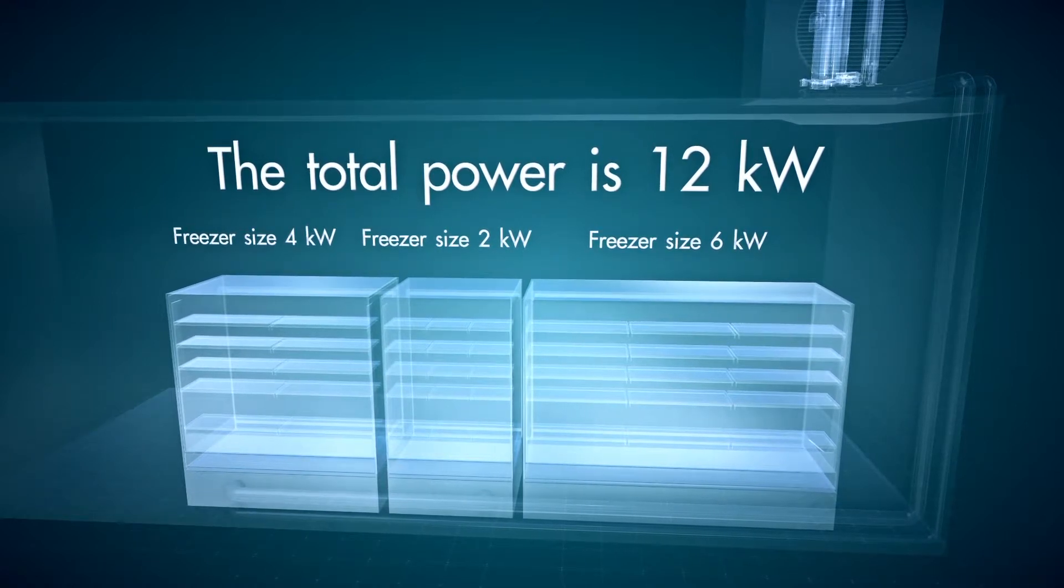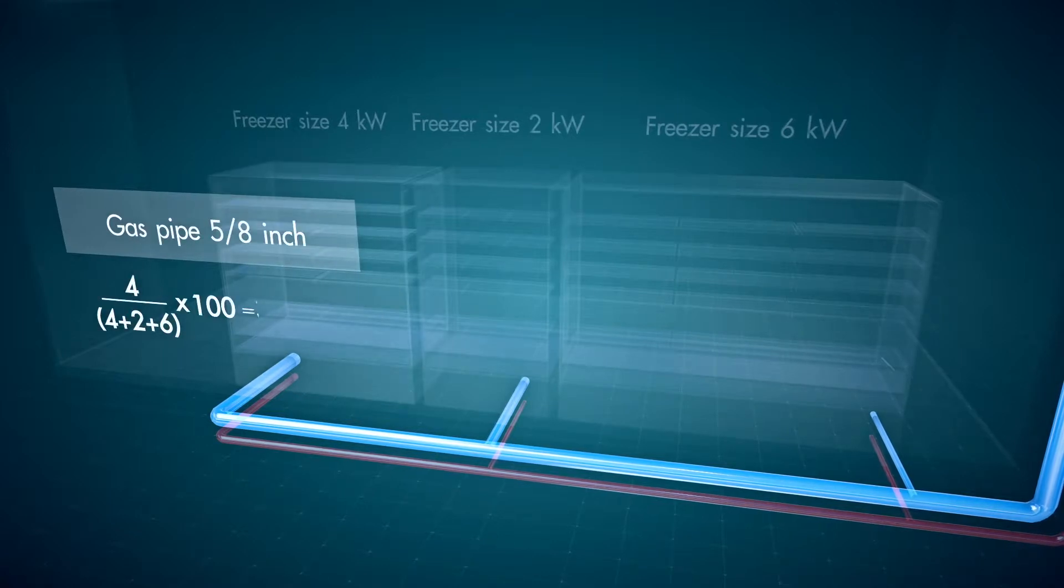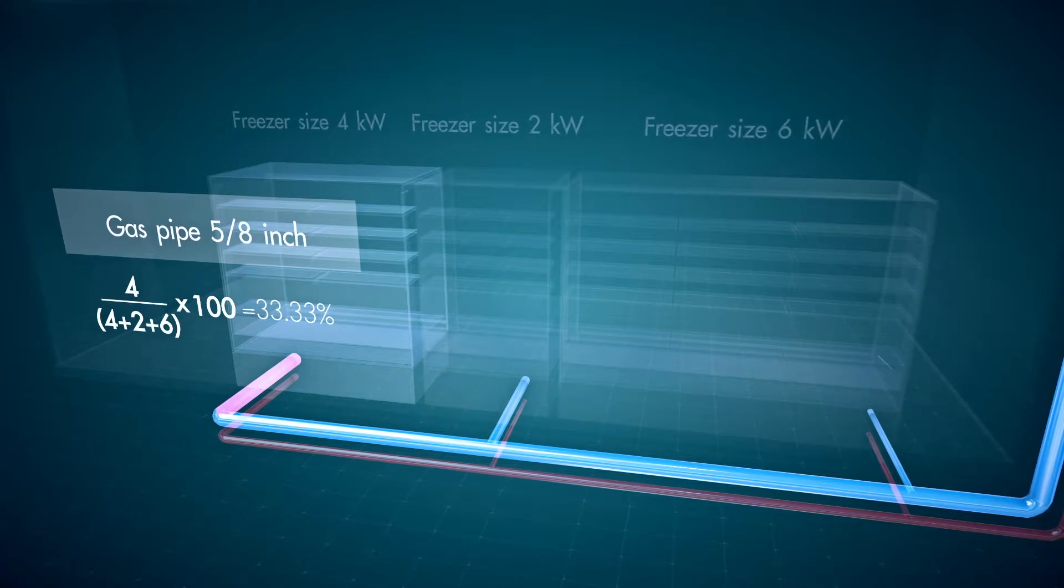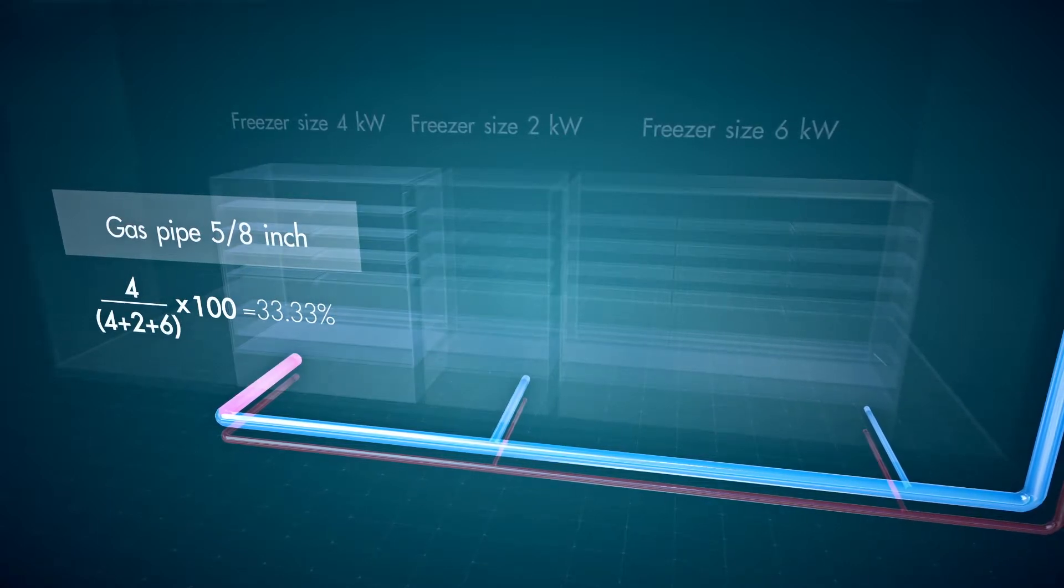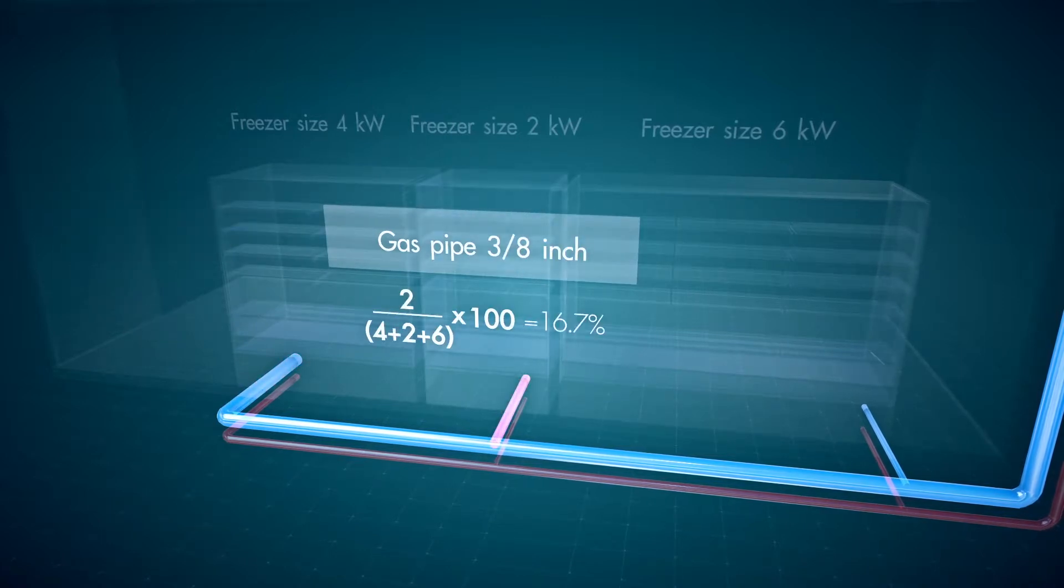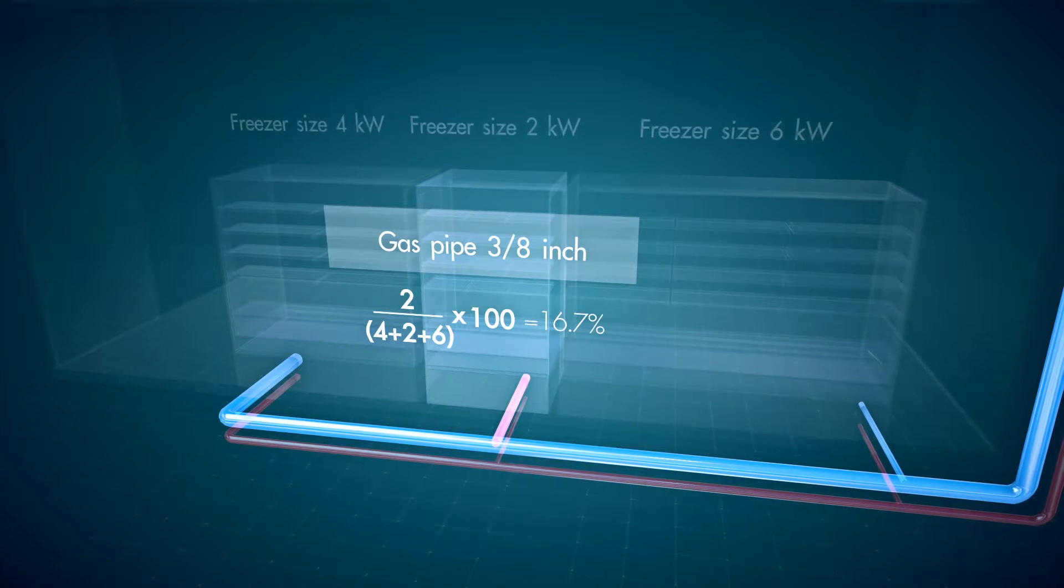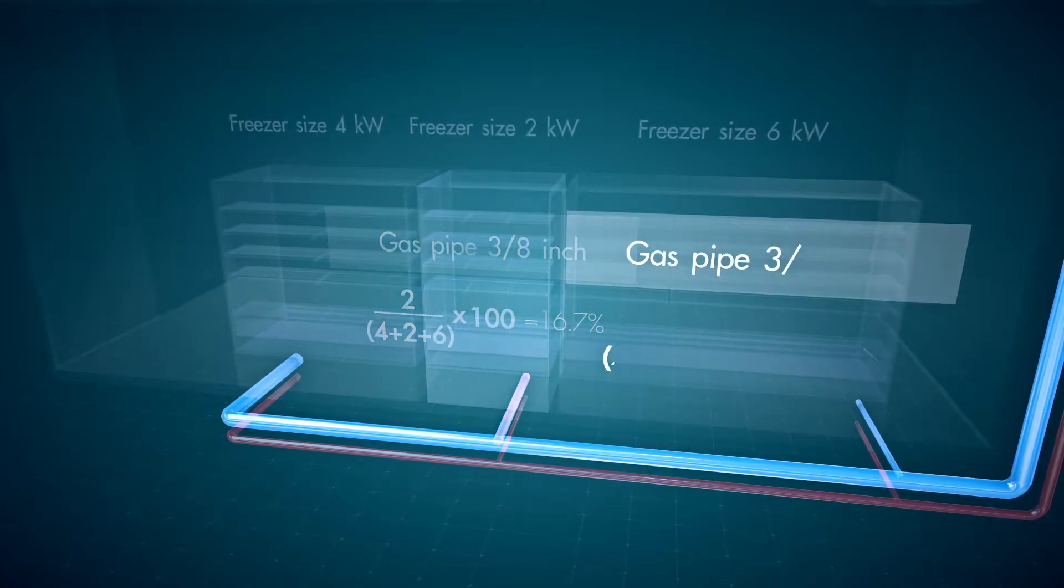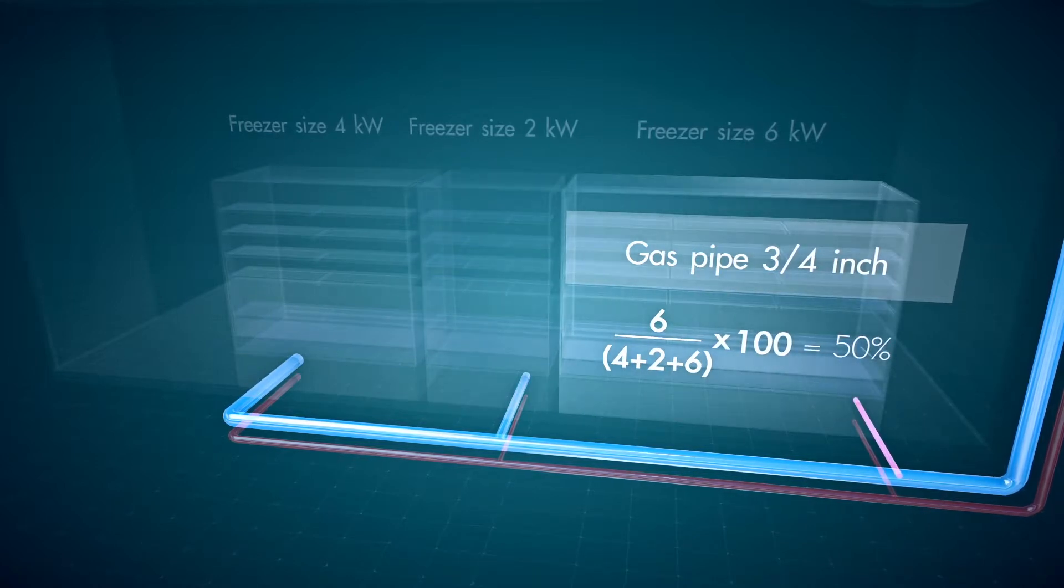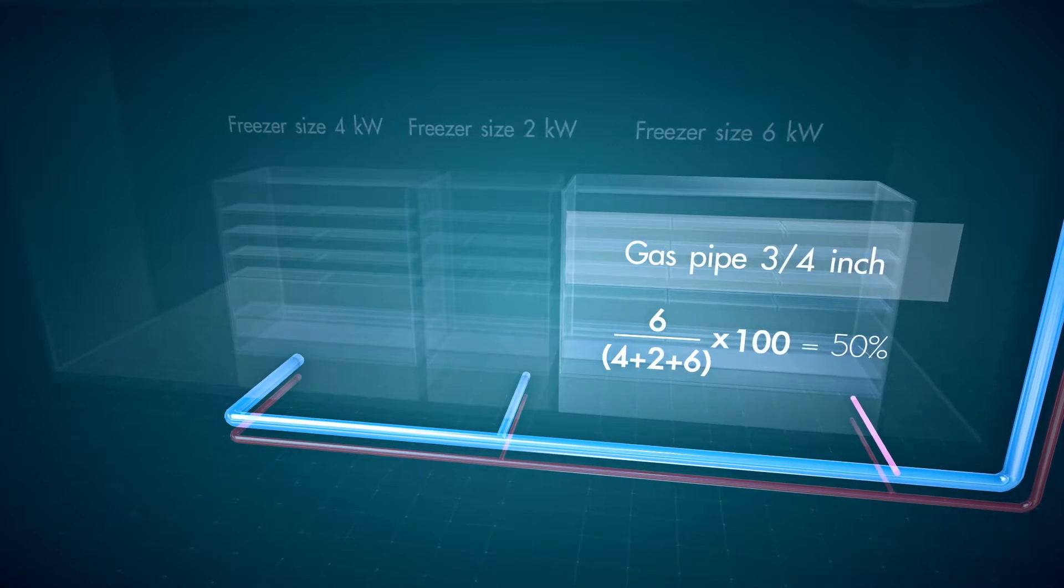The size of the pipe connecting to the 4 kW refrigerating unit would be ⅝ inches in diameter with the flow rate equal to 33%. The size of the pipe connecting to the 6 kW refrigerating unit would be ⅜ inches in diameter with the flow rate equal to 17%. The size of the pipe connecting to the 6 kW refrigerating unit would be ¾ inches in diameter with the flow rate equal to 50%.